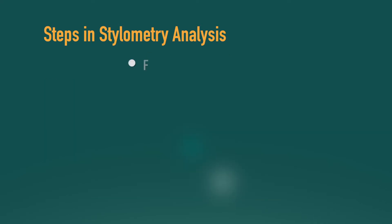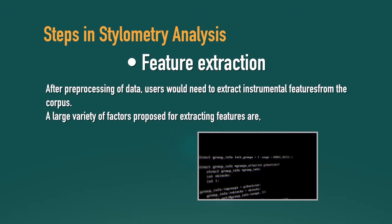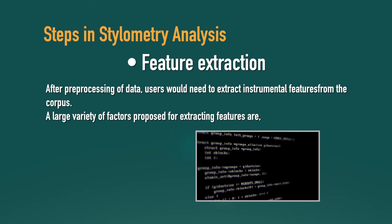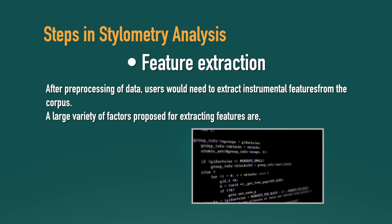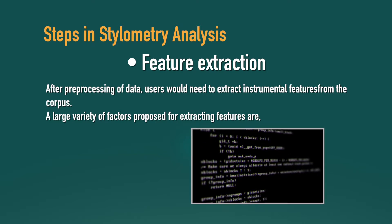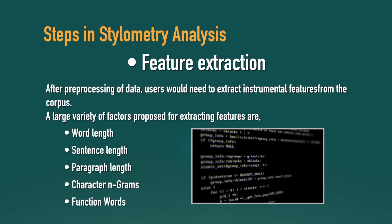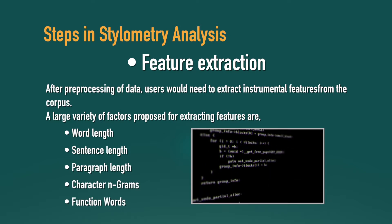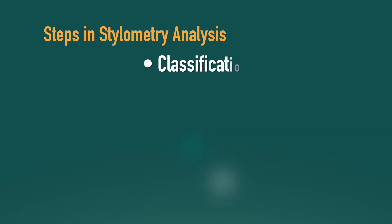Next comes feature extraction. After pre-processing of data, users would need to extract instrumental features from the corpus. A large variety of factors proposed for extracting features are word length, sentence length, paragraph length, character n-grams, and finally function words.